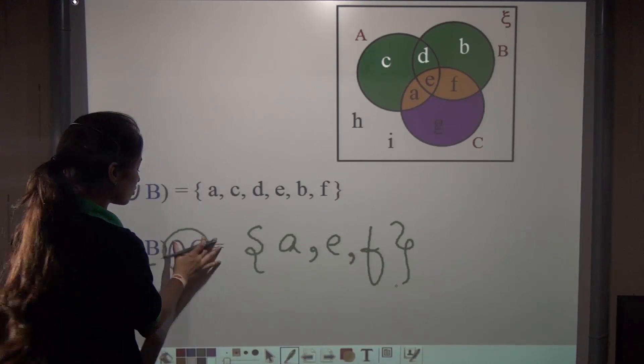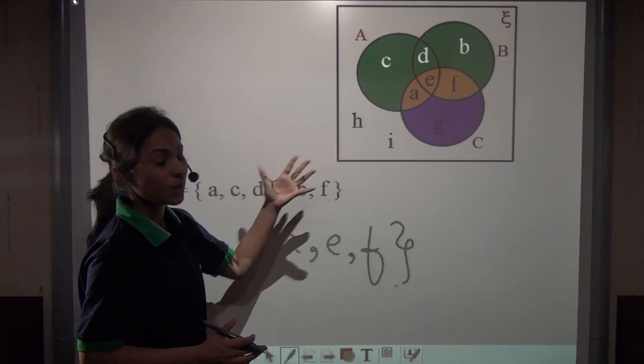You will get various such kinds of combinations, and using the Venn diagram you can solve these out.